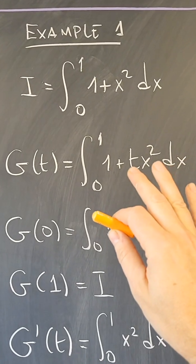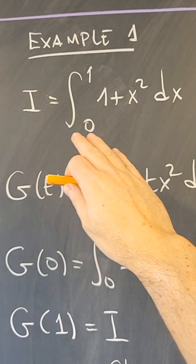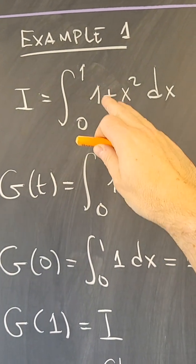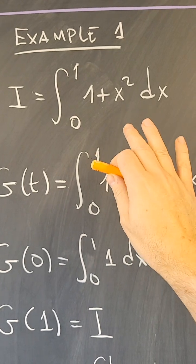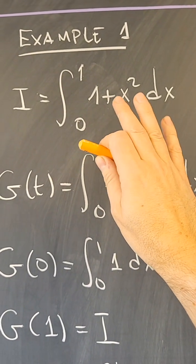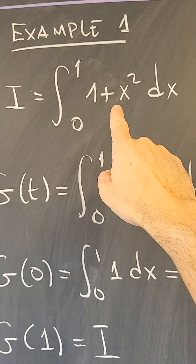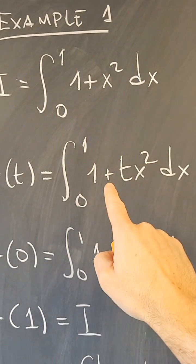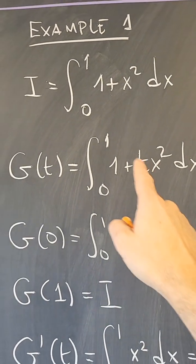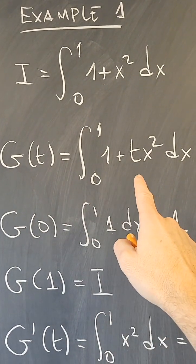Let's see one very simple example first. I'm going to compute the integral of 1 plus x squared between 0 and 1. This is a very simple integral, but it's just an example to see how the method works. I'm going to introduce a parameter t right there, so 1 plus x squared becomes 1 plus tx squared, and I'm going to consider the function with respect to t.